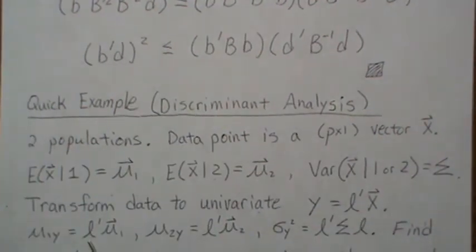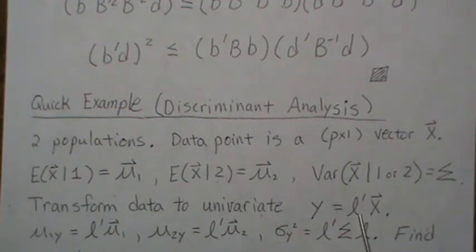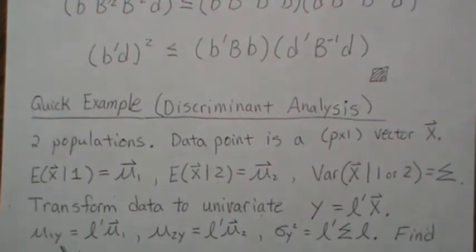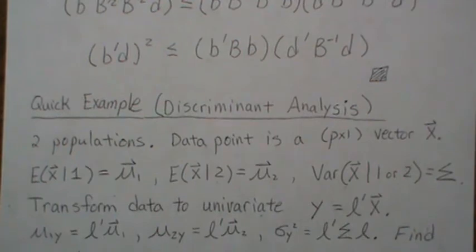And a couple notes before we decide how to find this linear combination is, whatever the linear combination is, if we take it times our mean vector, that's our new mean vector for population one. And the same for population two.